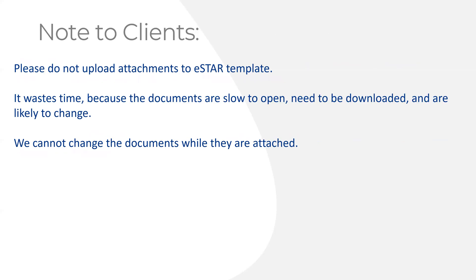Note to our clients: please do not upload anything to the eStar. Upload it to the folder designated for review — for example, 'for Sharon to review' or 'for Rob to review.' Put it in that folder so we can review it, make any edits if needed, then PDF and upload it. We keep the Word version separate and upload PDF versions so they don't get changed. If you upload directly to the eStar, we have to download it to read it, which slows us down. It's much faster to have it in a Dropbox folder. We can't change documents once they're attached — we'd have to download, edit, delete the old, and reattach.